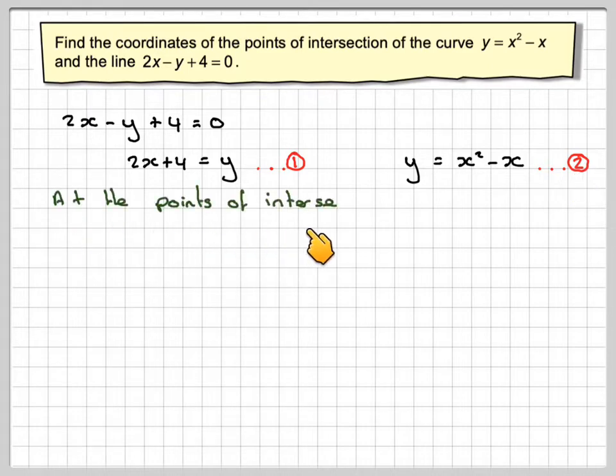So at the point of intersection, then x squared minus x, this equation, will be equal to this one. So x squared minus x will be equal to 2x plus 4.